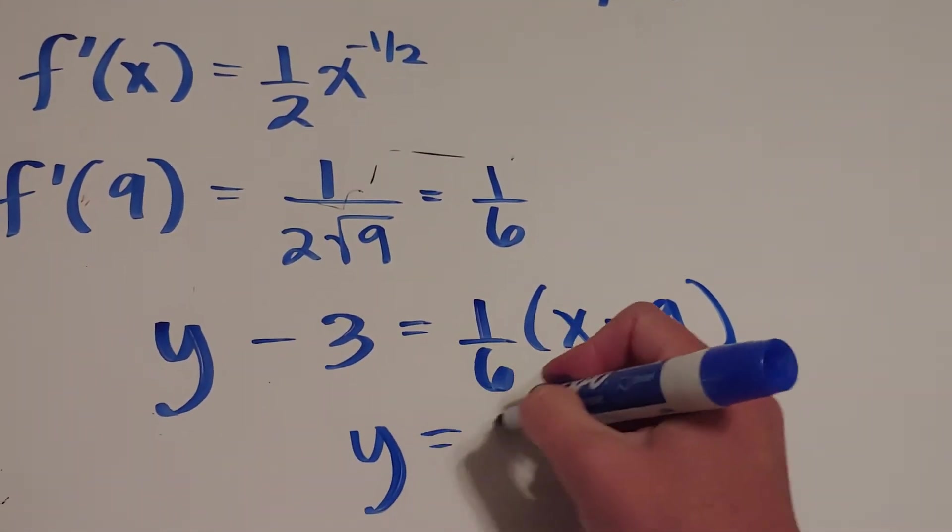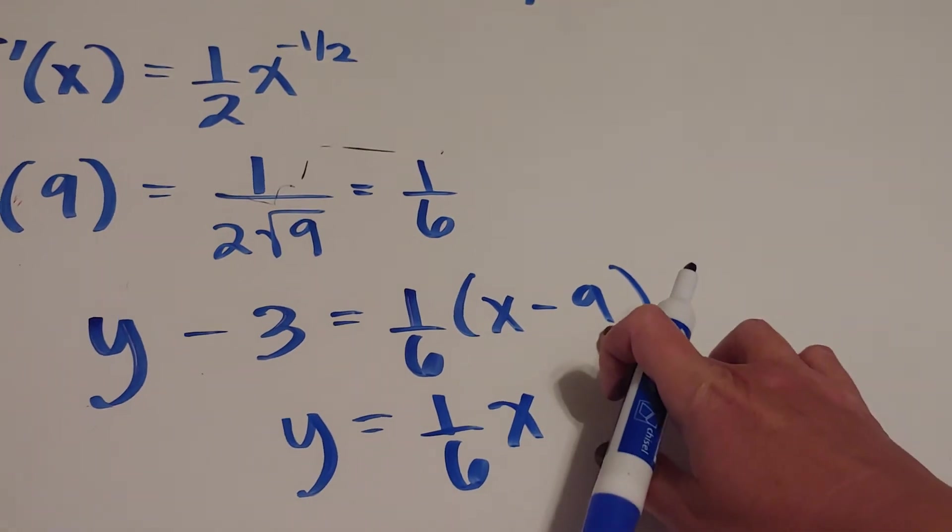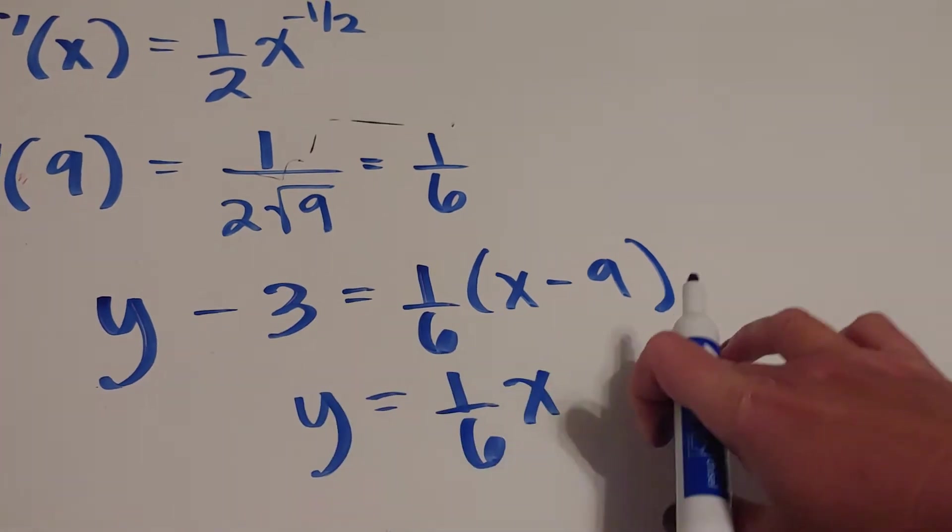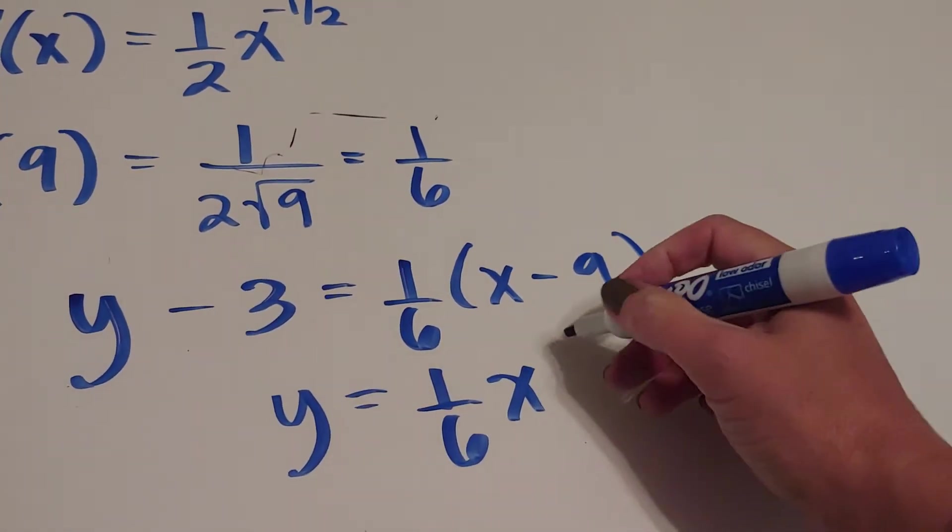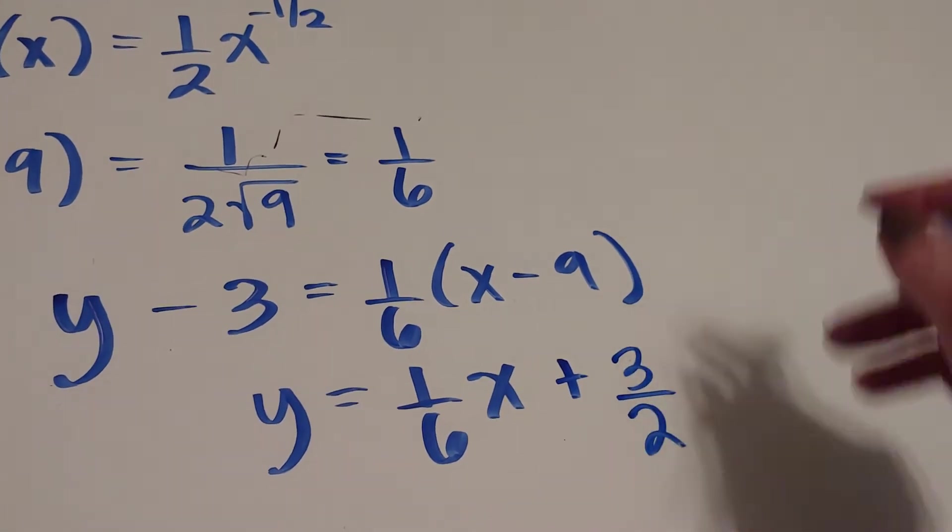Let's clean it up. So one sixth times nine is a negative three halves or a negative 1.5. When I add three over, it's going to be a positive three halves or a positive 1.5.